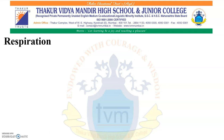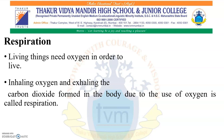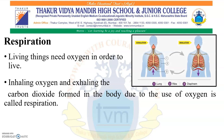The next characteristic is respiration. Living things need oxygen in order to live. Inhaling oxygen and exhaling the carbon dioxide formed in the body due to the use of oxygen is called respiration. The figure shows the process of exhalation and inhalation in our body. You can see lungs, ribs — also called the ribcage — and the diaphragm. Lungs, ribs, and diaphragm are all used during the process of respiration in our body.